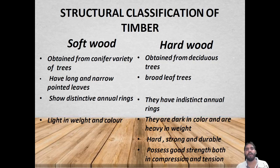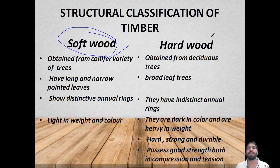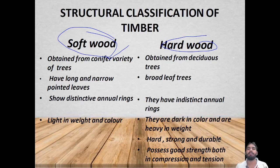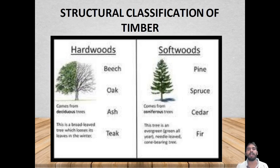Next is the classification of timber into softwood and hardwood. Softwood trees have long, narrow, pointed leaves, while hardwood trees have broad leaves. Softwood trees have distinctly visible annual rings, whereas in hardwood the annual rings are not as clearly distinguishable.